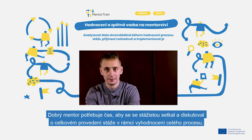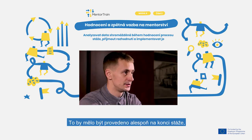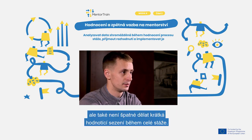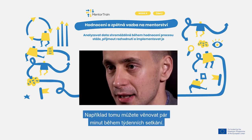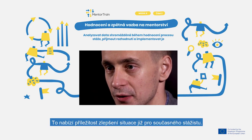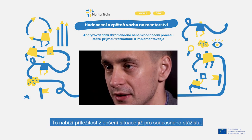A good mentor takes time to meet and discuss the overall execution of the apprenticeship with the apprentice to evaluate the process. This should be done at least once at the end of the apprenticeship, but it is not a bad idea to do short evaluation sessions throughout the apprenticeship. For example, during weekly meetups a short time can be dedicated to it, which offers an opportunity to improve things already for the current apprentice.